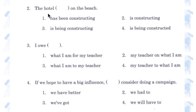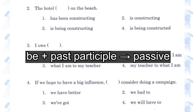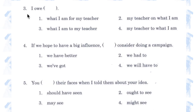Number 2. 'The hotel has been constructing / is constructing / is being constructing / is being constructed on the beach.' Number 4. A building can be constructed, but it cannot construct another building.